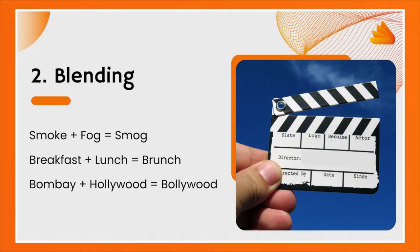The next technique is blending, which is also known as portmanteau morphing. For example: smoke plus fog becomes smog; breakfast plus lunch becomes brunch; Bombay plus Hollywood became Bollywood.